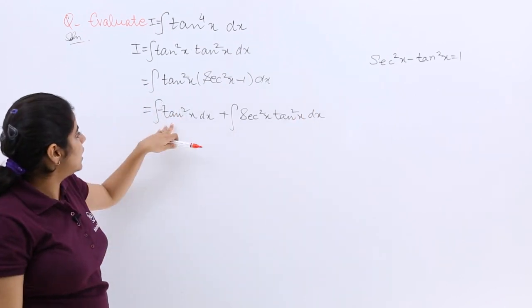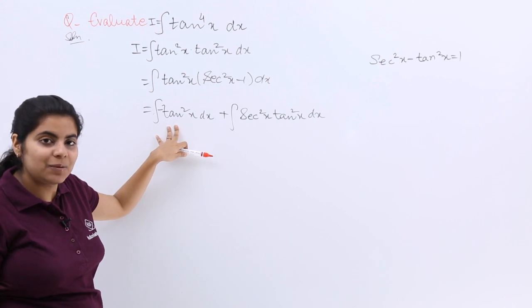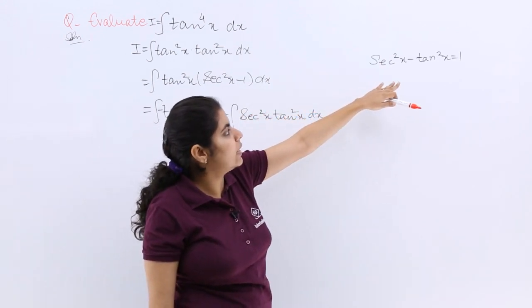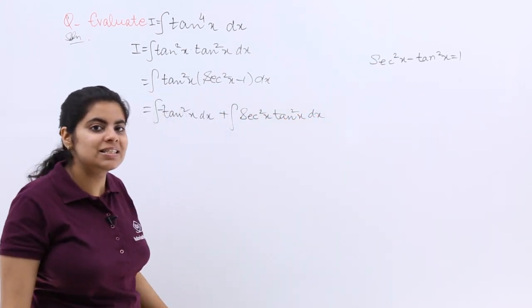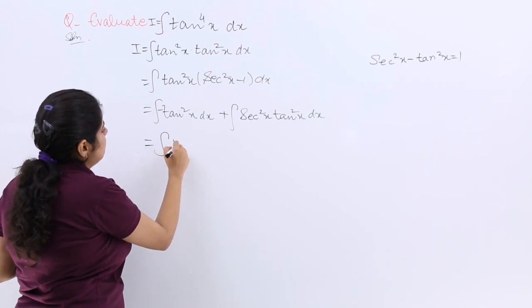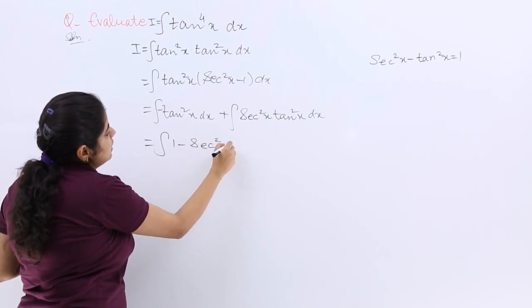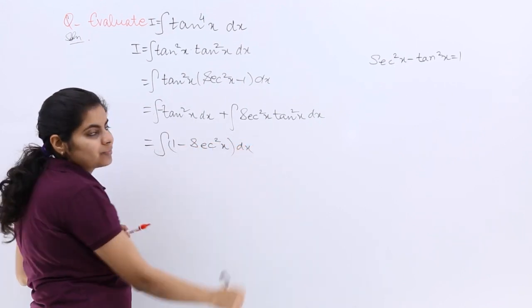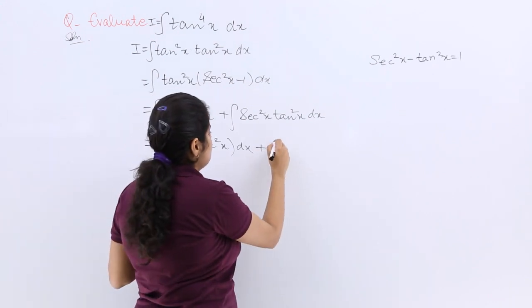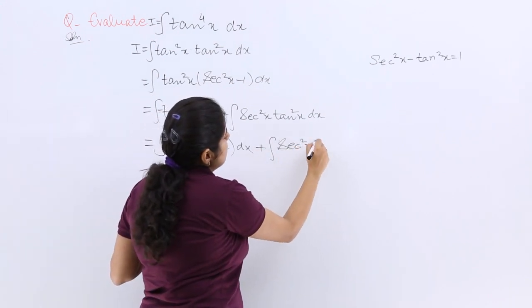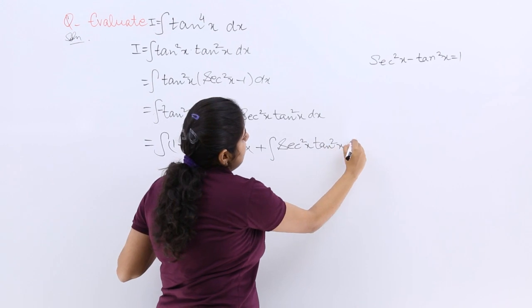Now here I have the formula again that can be used. Minus tan square x is one minus secant square x. So it is nothing but 1 minus secant square x dx then plus integration again secant square x tan square x dx.